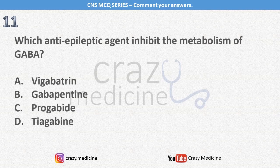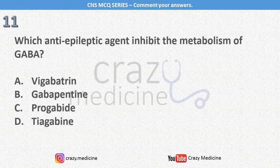The next question: which anti-epileptic agent inhibits the metabolism of GABA? Options are Vigabatrin, Gabapentin, Progabide, and Tiagabine. Epilepsy itself is a very high-yielding topic for NEAT-PG, especially drug of choice and EEG wave pattern. Important points we will discuss in our solution video.